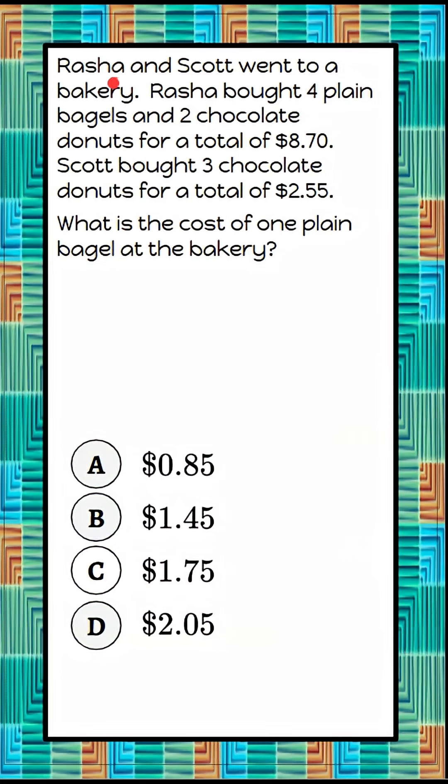Rasha and Scott went to a bakery. Rasha bought four plain bagels and two chocolate donuts for a total cost of $8.70. Scott bought three chocolate donuts for a total cost of $2.55. And we're asked, what is the cost of one plain bagel at the bakery?